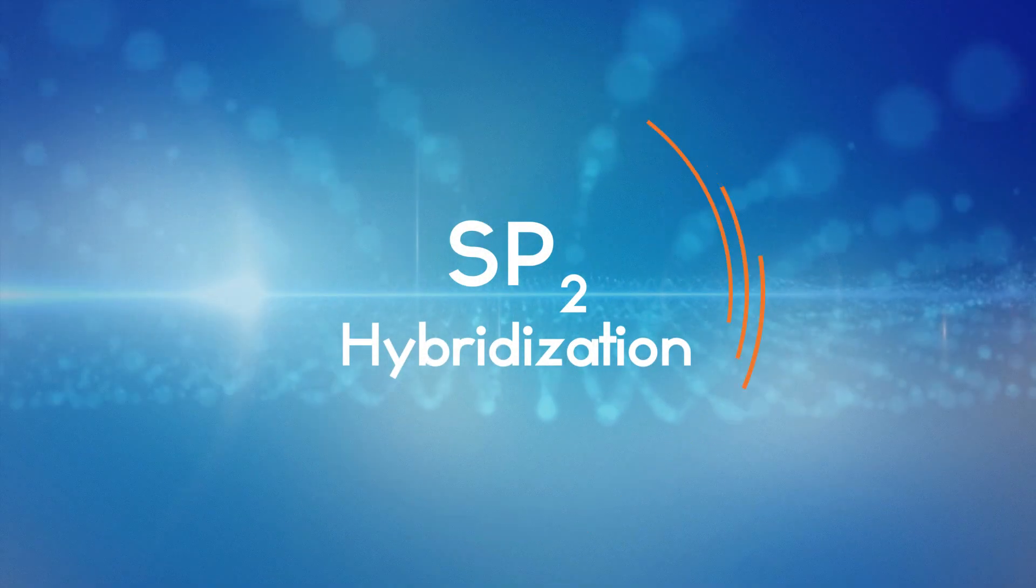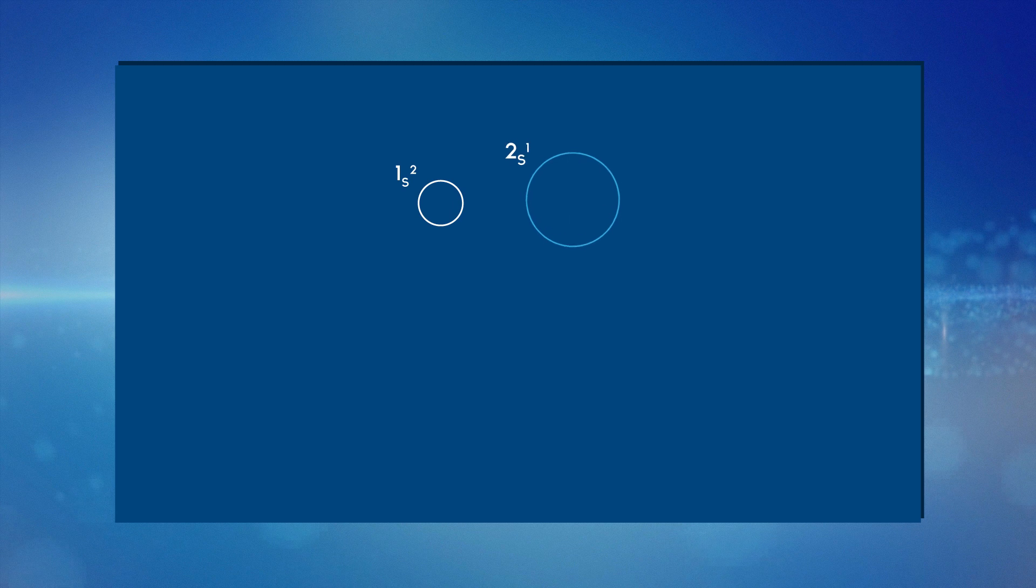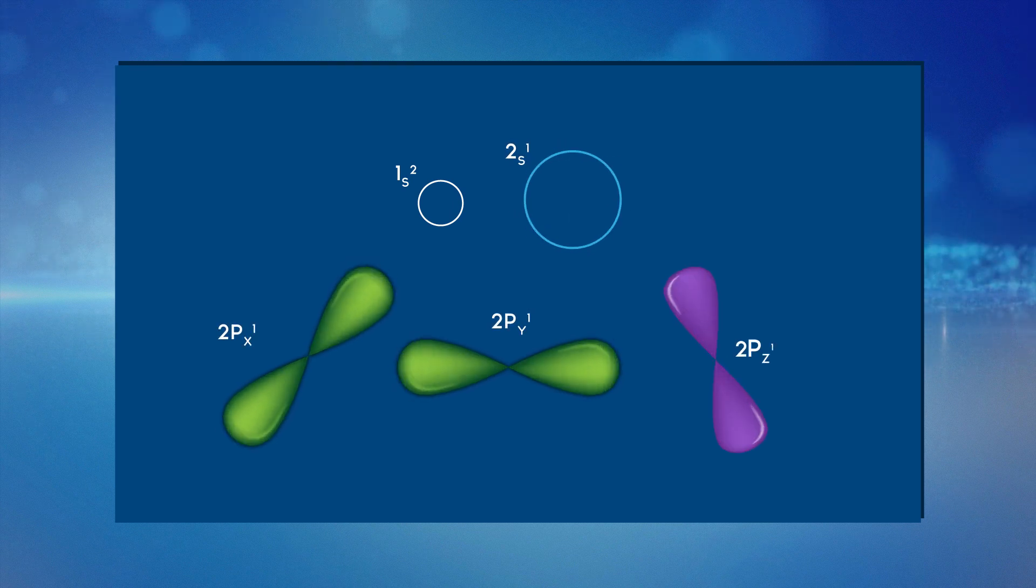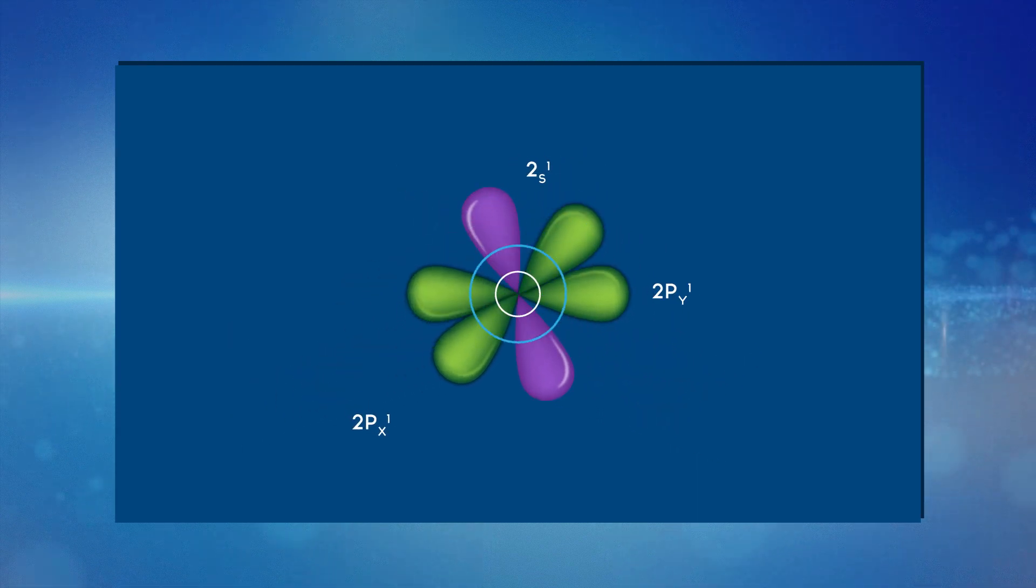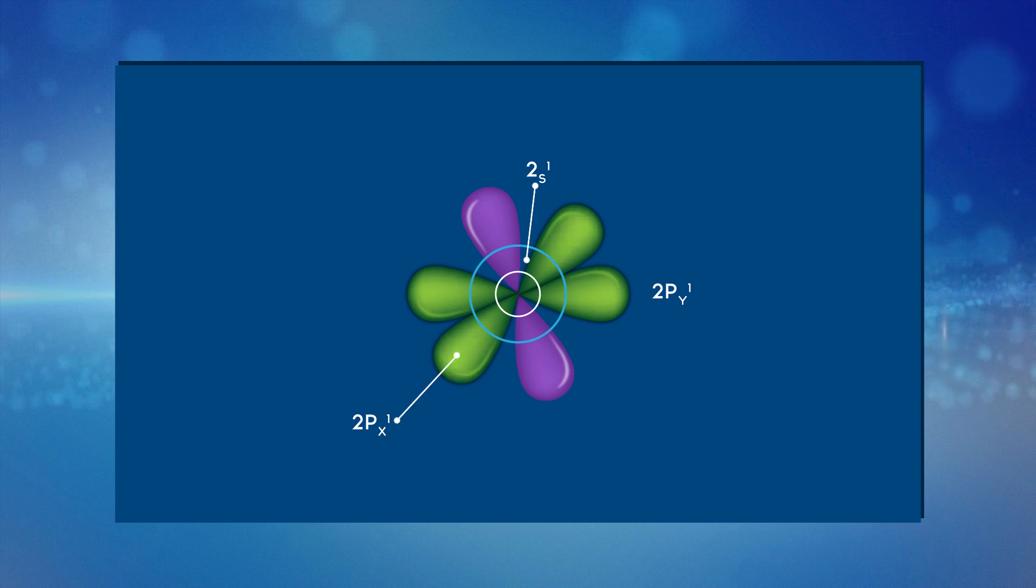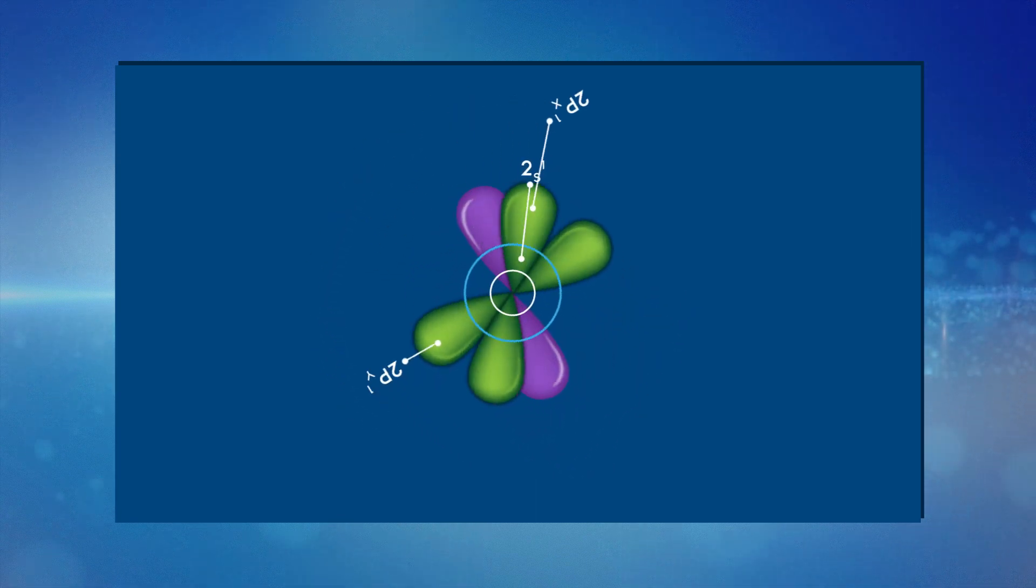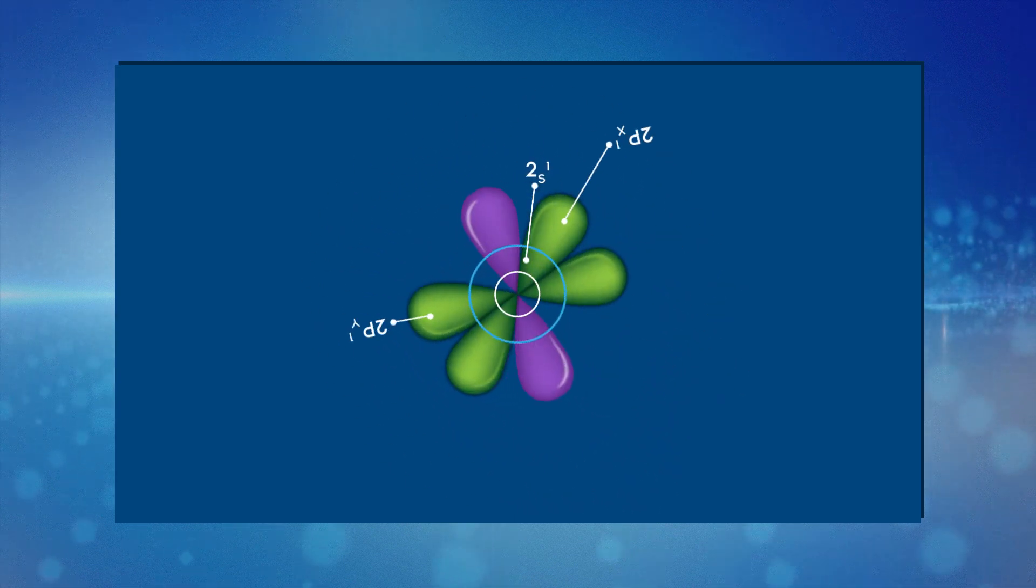In excited state, the carbon atom undergoes sp3 hybridization. Besides sp3 hybridization, carbon atom can also undergo sp2 hybridization. In sp2 hybridization, 2s, 2px, and 2py orbitals intermix. The intermixing of 2s, 2px, and 2py orbitals is called sp2 hybridization.